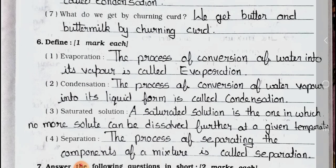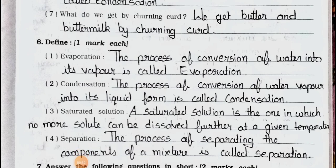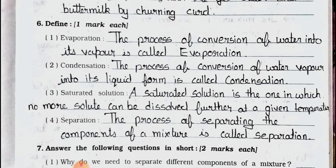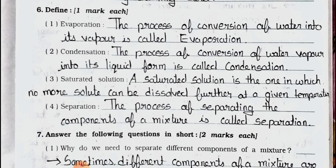One mark each. Number 1: Evaporation. Answer: The process of conversion of water into its vapour is called evaporation. Number 2: Condensation. Answer: The process of conversion of water vapour into its liquid form is called condensation.